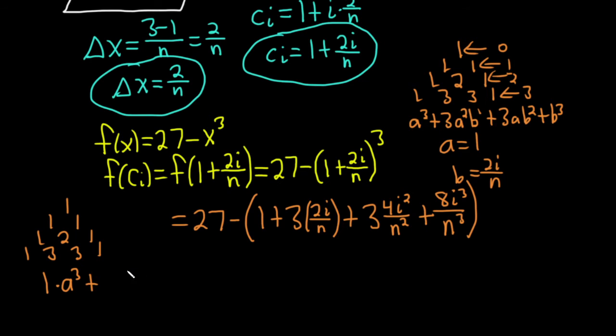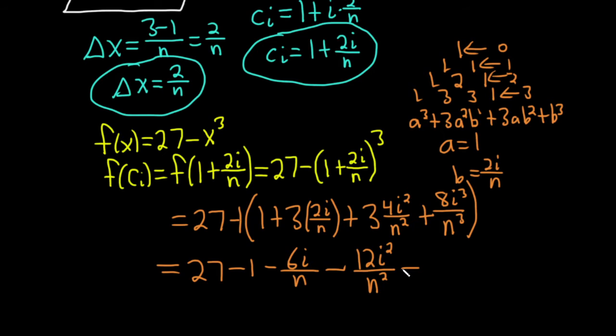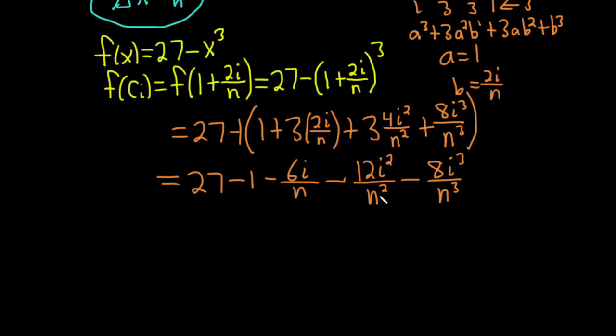Let me delete all of this. So this is equal to 27 minus 1. We'll distribute the minus. So minus 6i over n minus 12i squared over n squared minus 8i cubed over n cubed. We can subtract the 27 and the 1. So this is equal to 26 minus 6i over n minus 12i squared over n squared minus 8i cubed over n cubed.